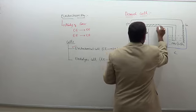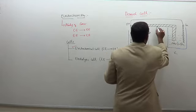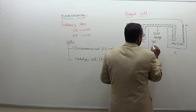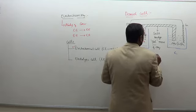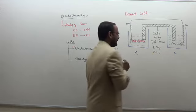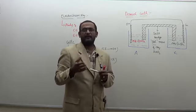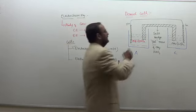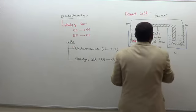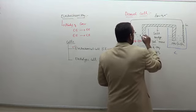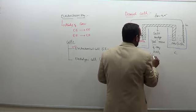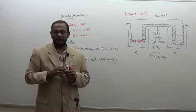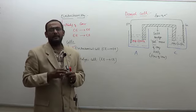The salt bridge is an inverted U-like arrangement which consists of a gel mass of aqueous potassium nitrate solution — it can also be aqueous sodium chloride or potassium chloride. Externally, in the external circuit, current is due to the flow of electrons. Internally, through the electrolyte and the salt bridge, it is the flow of ions. So current is conducted internally by the flow of ions, and externally through the wire by the flow of electrons.